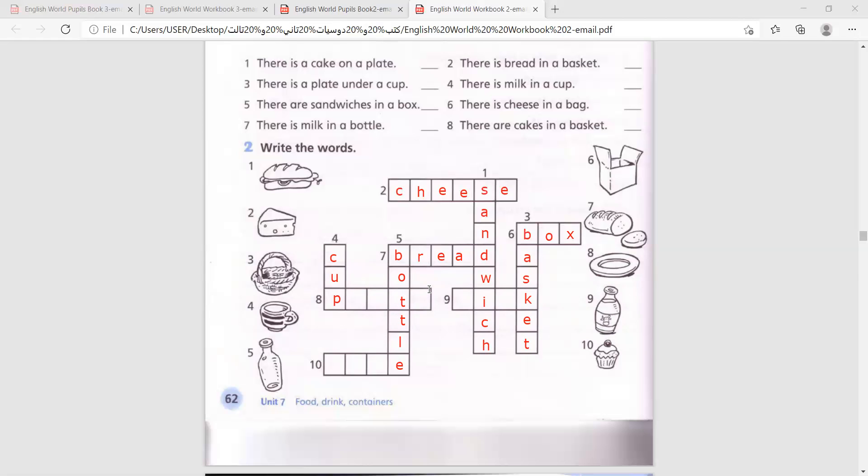Number eight, plate. P and T are written, so here we will write L-A-E. Yes, plate. And number nine, milk. M, I and K are written, so we'll write M and L. Number ten, cake, C-A-K-E. And that's it, we have finished. Pause and copy. Wonderful.